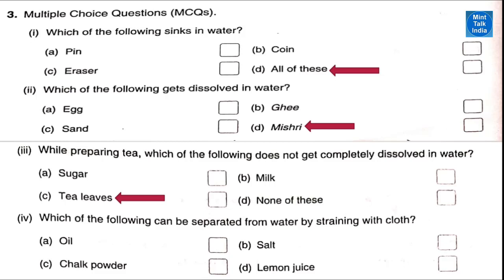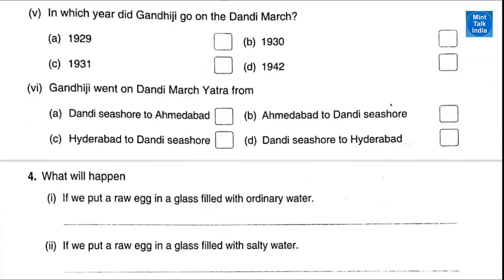Number 4: which of the following can be separated from water by straining with a cloth? We can separate only chalk powder. Number 5: in which year did Gandhiji go on the Dandi March? In the year 1930. Number 6: Gandhiji went on the Dandi March Yatra from Ahmedabad to the Dandi seashore.